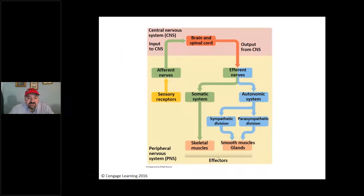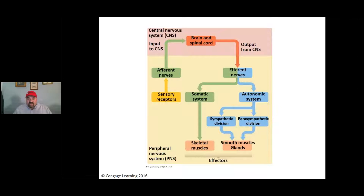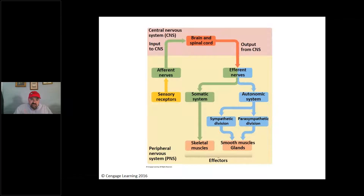It's important to realize that it's one nervous system with different parts and branches. There is something called the enteric nervous system that deals specifically with the digestive system, but it's still an extension of the actual nervous system. When thinking of the motor output divisions, we refer to the somatic and autonomic nervous systems.